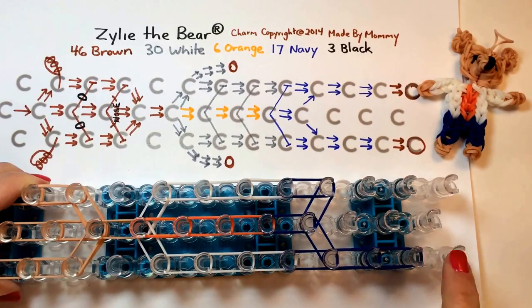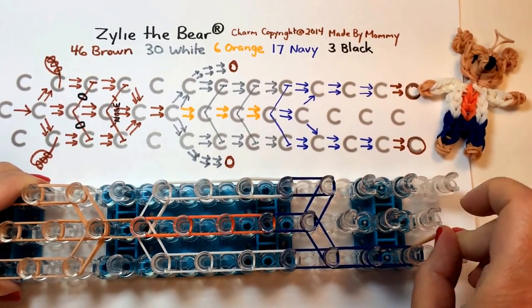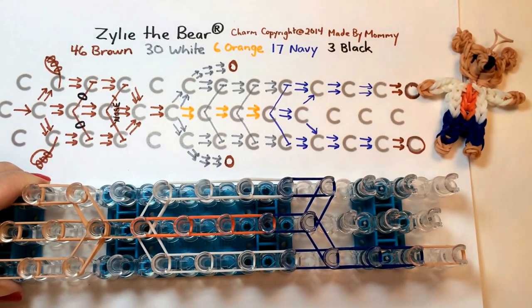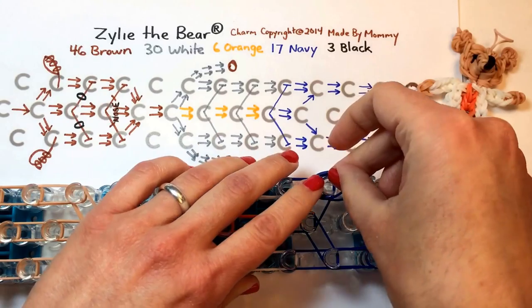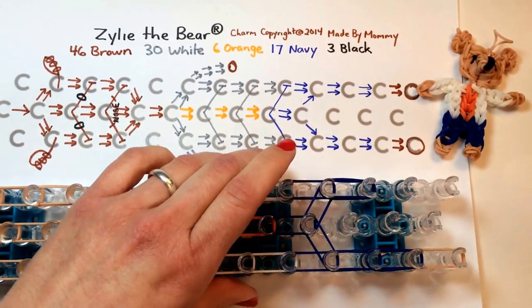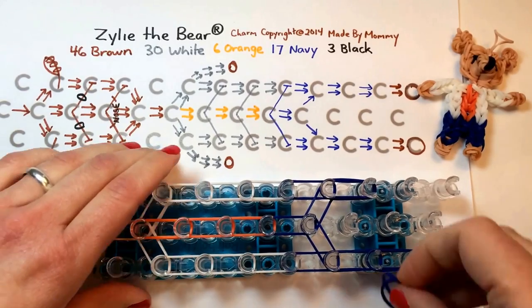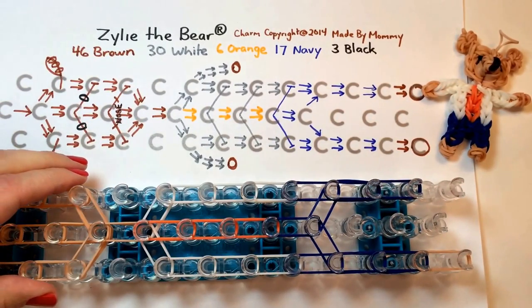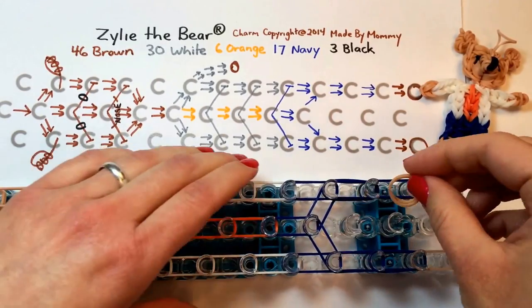Then you can continue down the entire leg with two at a time for the next two positions. Before the end, we switch back to the brown for Xylee's feet. Then repeat the same for the other leg because we want the two legs to match.